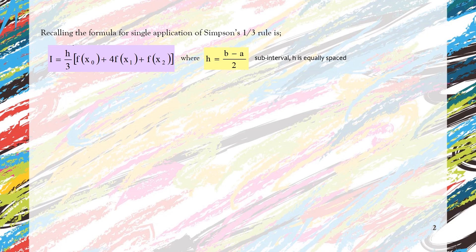H in this formula is the sub-interval. In Simpson's one-third rule for single application, you have only two sub-intervals, and you need that minimum of two sub-intervals to solve using Simpson's one-third rule.